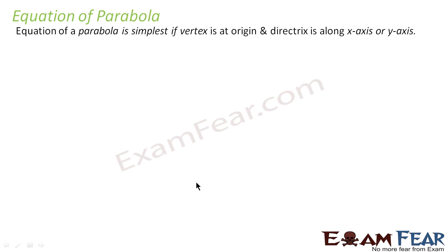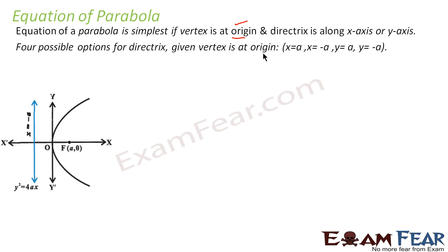Now let us find the equation of the parabola. The equation of the parabola is simplest when the vertex is at the origin and the directrix is along the x- or y-axis. For class 11, we will only take parabolas where the vertex is at the origin and the directrix is along the x- or y-axis. There are four possible options. In the first case, the directrix is x = −a, the vertex is the origin, the focus is (a, 0), and the equation is y² = 4ax.